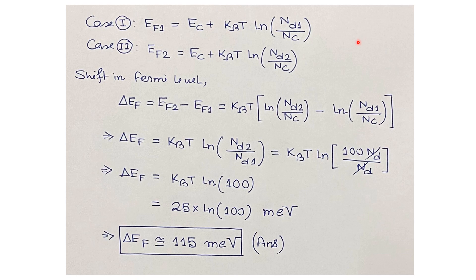Applying the Fermi level formula for both cases: EF1 = EC + kBT·ln(ND1/NC) and EF2 = EC + kBT·ln(ND2/NC), where ND2 = 100·ND1. The shift in Fermi level is ΔEF = EF2 − EF1 = kBT·[ln(ND2/NC) − ln(ND1/NC)] = kBT·ln(ND2/ND1).